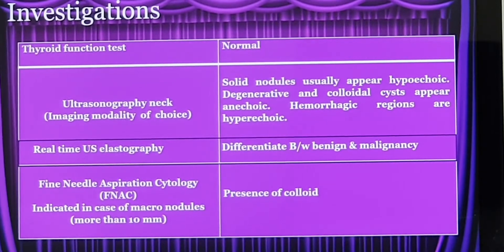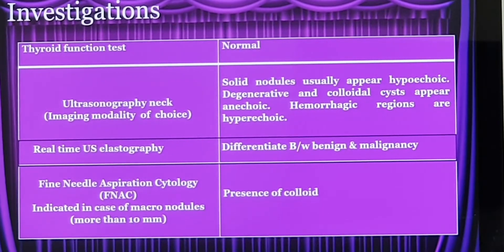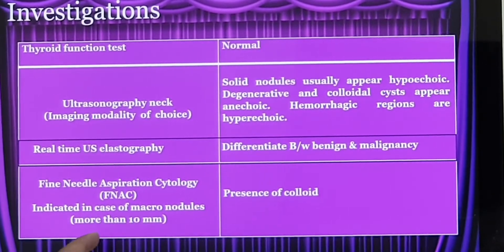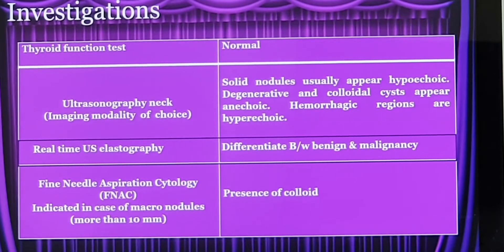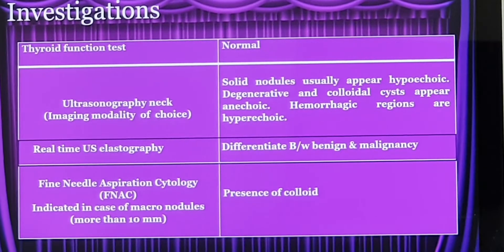When we find a nodule and the size is more than 10 millimeters, we would prefer to put in a small needle, aspirate, and send for examination of the cells to come to a diagnosis. That is called fine needle aspiration, and it is usually done when the nodule size is more than 10 millimeters. Even if the size is between 5 to 10 millimeters, in some situations we will go ahead and do an FNAC.